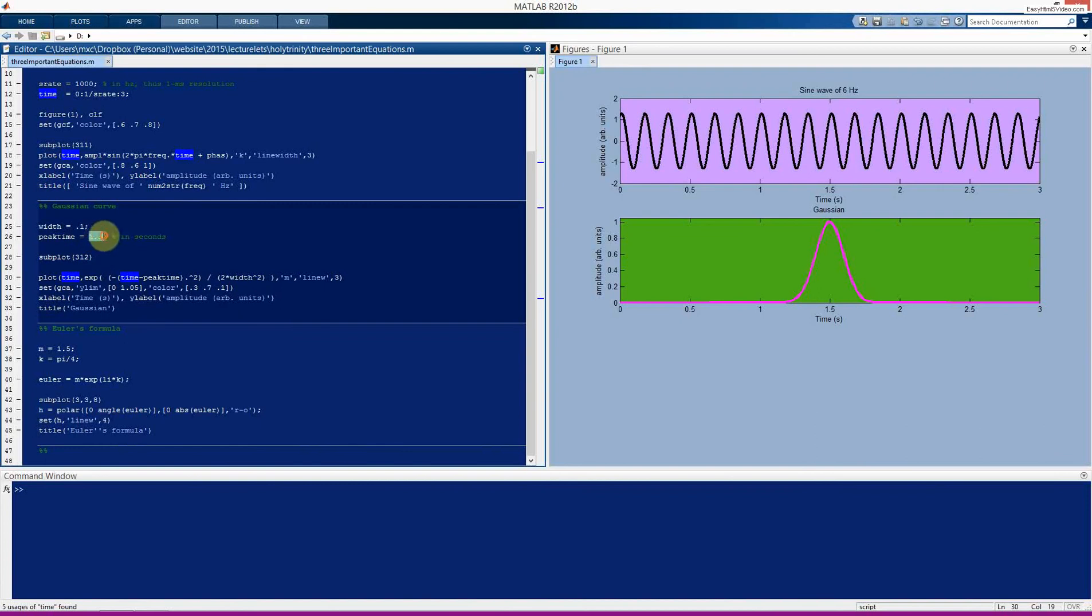So now if we set this to 0 and run it again, you can see now you only see half the Gaussian because it's peaking at 0. So I could have defined time to start at, let's say, minus 2 or something. Or I just decided here to set the peak time to be in the middle so we can see the entire Gaussian.